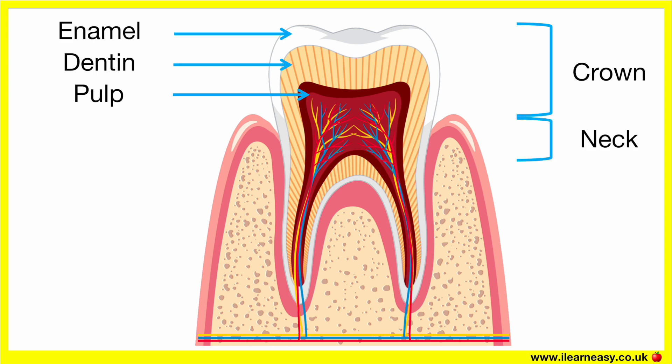The neck of the tooth connects the crown to the root. The neck also serves as a junction point for gums to attach and support the tooth.